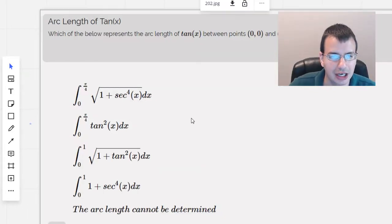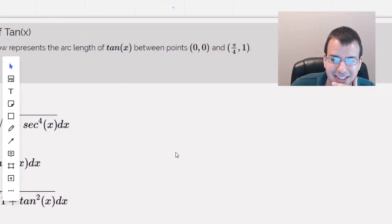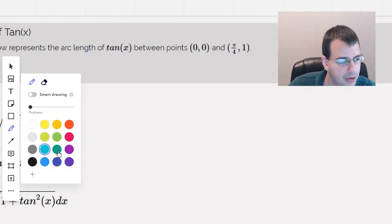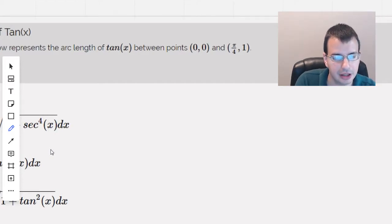Which below represents the arc length of tangent of x between points (0, 0) and (π/4, 1)? Okay, so start by writing out the formula here.